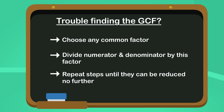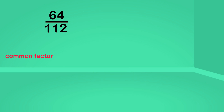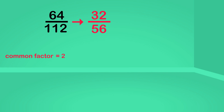This can be particularly helpful when simplifying fractions with large numbers. For example, let's simplify this fraction. I know a common factor of both numbers is two, because both are even numbers. I'll divide the numerator and the denominator by two. Sixty-four divided by two is thirty-two. One hundred and twelve divided by two is fifty-six.